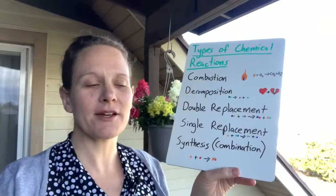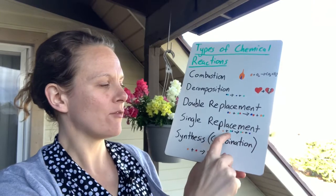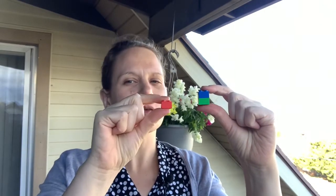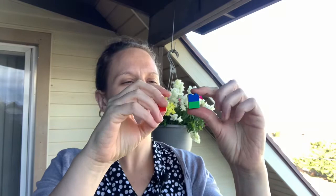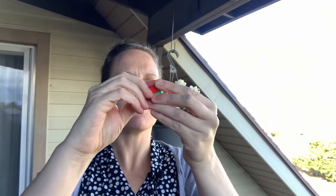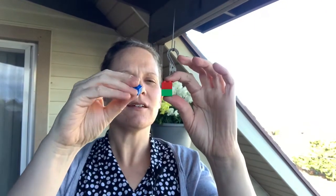In a single replacement reaction, one of the reactants bonds with part of one of the other reactants. An example would be if I had two things bonded together and something by itself. In the chemical reaction, the things bonded together would break apart and bond with the other reactant to form two different products. Now the blue is by itself, and the red is bonded with the green.